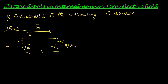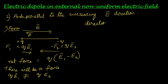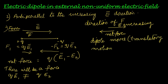The net force equals q(E1 − E2). Since E1 is smaller than E2, there is a net force — because q·E1 ≠ q·E2. The direction of the net force is along the increasing electric field direction. The effect on the electric dipole is translatory motion in the direction of the dipole moment, which is anti-parallel to the increasing electric field direction — that is, opposite to the direction of the electric field.